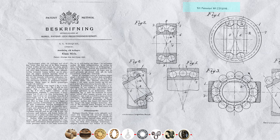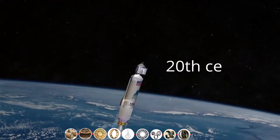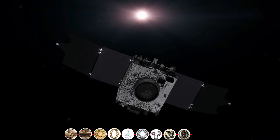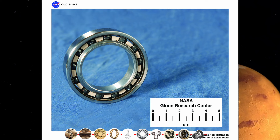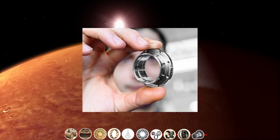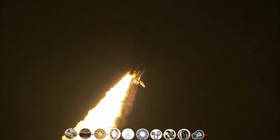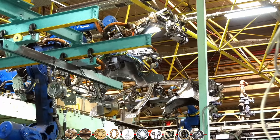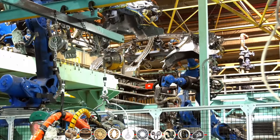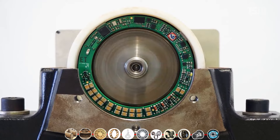And later in the 20th century, when we started exploring space during the space age, we needed special bearings. Scientists invented new materials like ceramic and super strong metals for space bearings. These bearings had to survive the vacuum and extreme temperatures of space. And now in the 21st century, we are in the digital age. Bearings have become smart with sensors — now they can tell you when they need maintenance, helping machines work well.